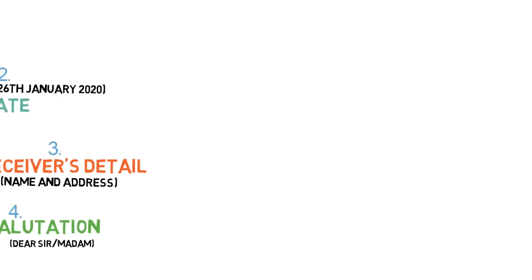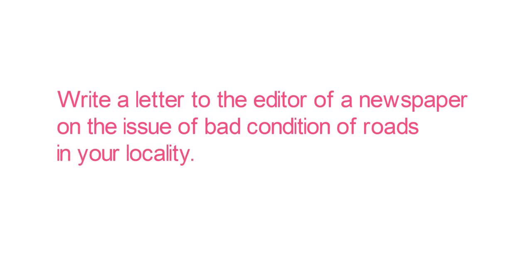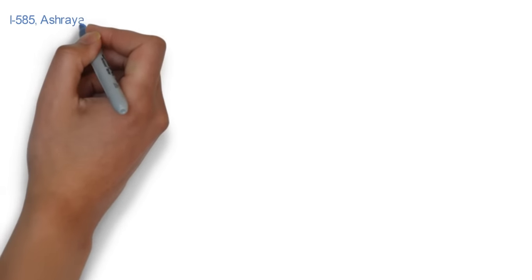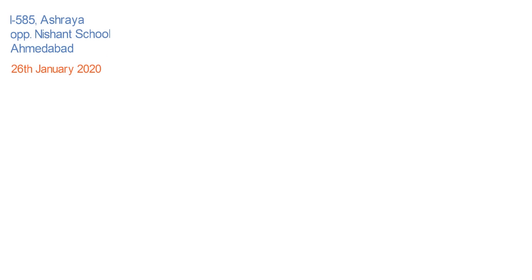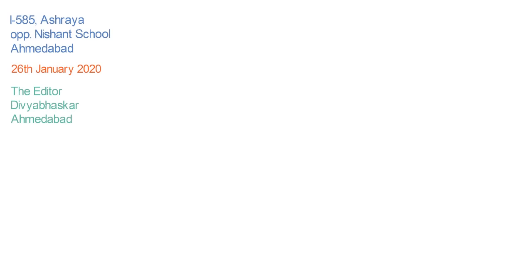Now let's use the format and understand how to write a letter to the editor of a newspaper on the issue of bad condition of roads in your locality. Step 1 — sender's details: I-585 Ashrai, opposite Nishant School, Ahmedabad. Step 2 — date: 26th January 2020. Step 3 — receiver's details: The Editor, Divya Bhaskar, Ahmedabad. Step 4 — salutation: Dear Sir. Step 5 — subject: Regarding the bad condition of roads.